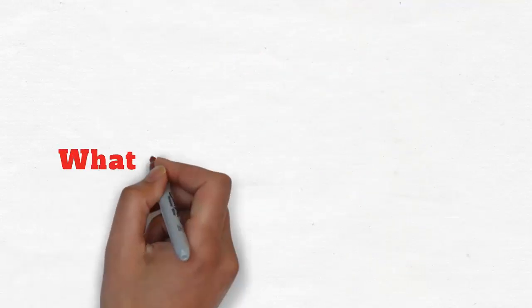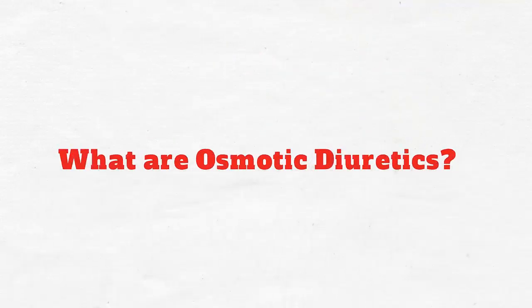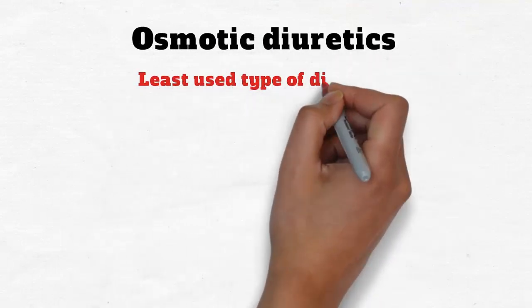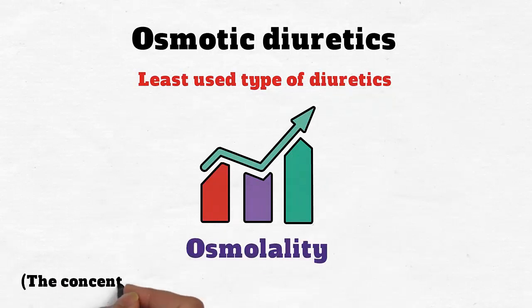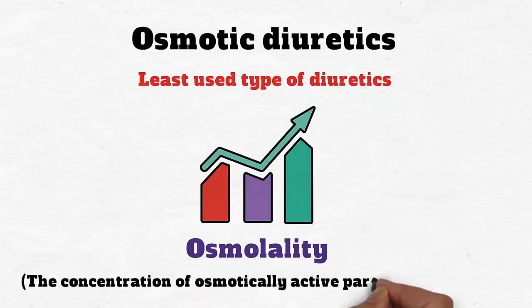What are osmotic diuretics? Osmotic diuretics are the least used type of diuretics. They work by increasing osmolality, the concentration of osmotically active particles in a solution.